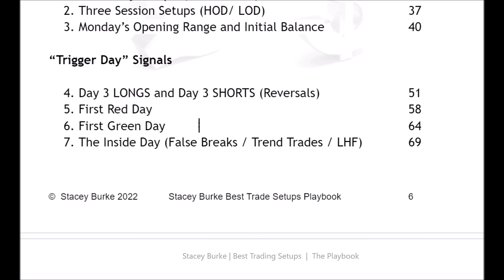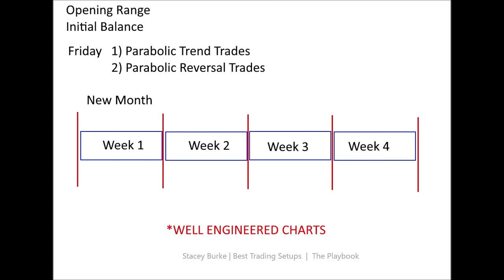If you understand the opening range and initial balance, the next most important thing is that we have a new year, new month, new week starting — meaning a new monthly timing cycle. Week one, week two, week three, week four: opening range, initial balance, parabolic opportunities. This week is first Friday non-farm payrolls Friday, so the economic calendar will impact these templates each week. On free cash Friday I'm looking for the best template over the week with a well-engineered chart for either a parabolic trend trade or a parabolic reversal trade opportunity.